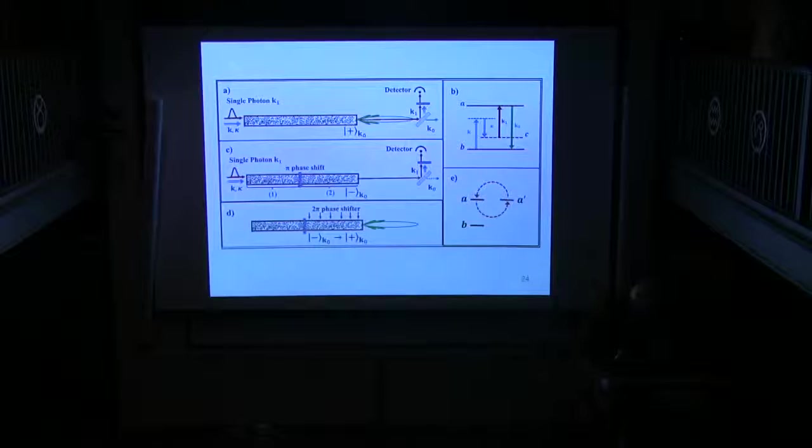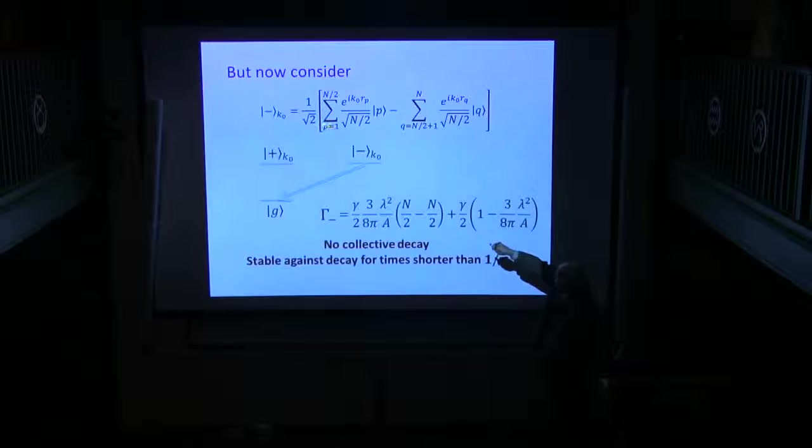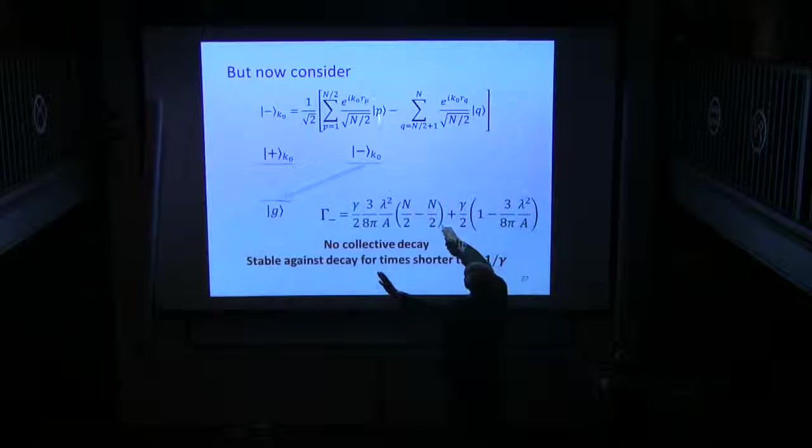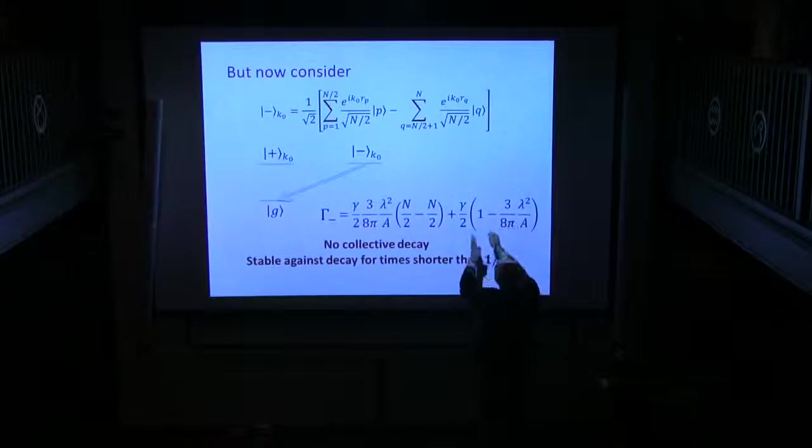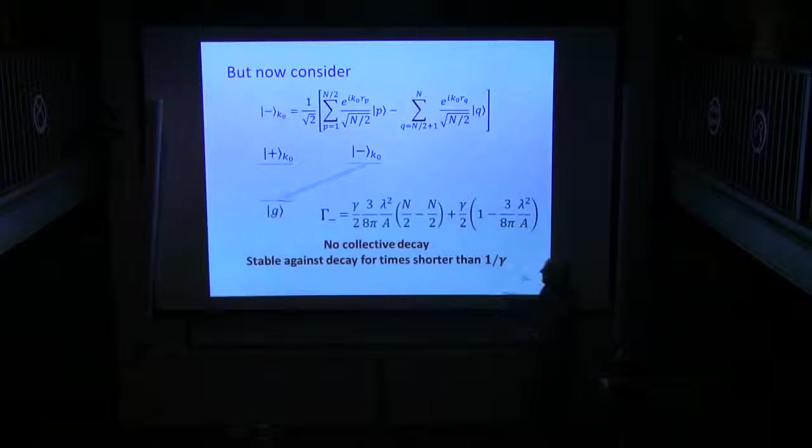See? I've got now such a state, such a state, called a minus state. So for the atoms 1 to N over 2, here on the left-hand side, I get just the timed Dicke state with the right factors, sum on P. But over here on the right-hand side, I'm summing from N over 2 plus 1 to N, but with a minus sign because of that pi phase shifter. Now, what about the decay rate from here to there? Turns out that you get this ubiquitous sort of factor times N for here minus N for there.